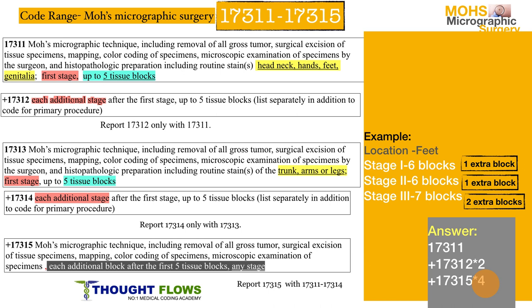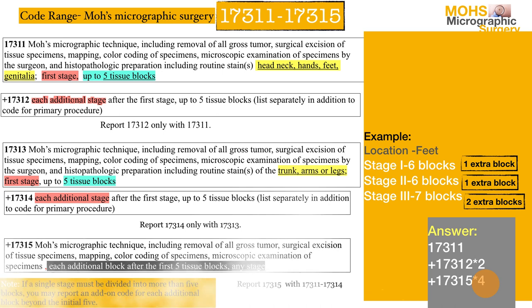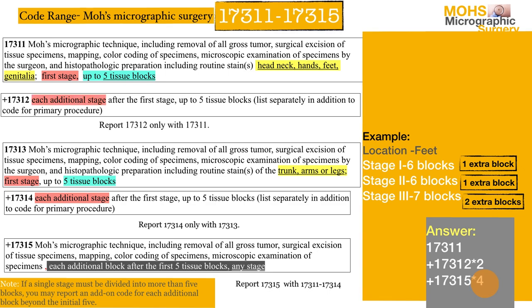The important key point is that code 17315 is used only for extra blocks beyond the first five tissue blocks in each stage.